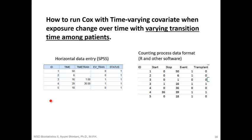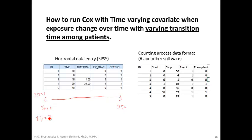ID number one: this person was followed from time 0 and then died at day 50. Unfortunately, this person did not receive a heart transplant and died. ID number three received a transplant after day 1, was only followed for 16 days, and unfortunately died on day 16.